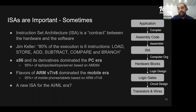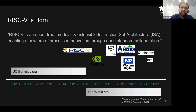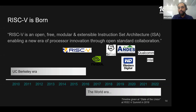RISC-V is an open, free, modular, and extensible ISA. It allows you to design chips without paying royalty. It's open, so anyone can contribute to defining the ISA or its extensions. It's modular, so when designing a processor you don't have to take every instruction that's been defined — you can take a subset. That provides the targeting of the SoC for a particular application, which is really the hallmark of this heterogeneous computing era.